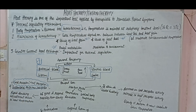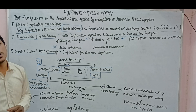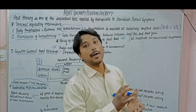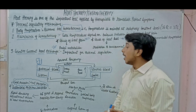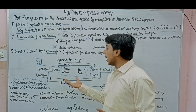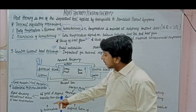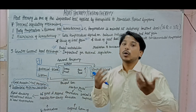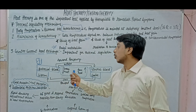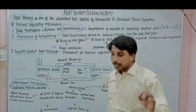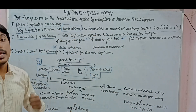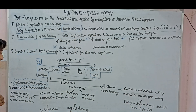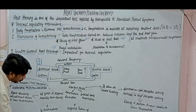The next part is cutaneous thermoreceptors. As we know, we have two cutaneous thermoreceptors: cold receptors and heat receptors. Cold receptors are many more in number compared to heat receptors. Now we will learn how to understand the responses of these two receptor types toward cooling or heating.